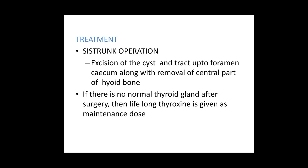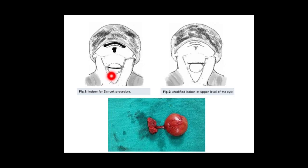The treatment is surgery and the operation is called the Sistrunk operation. It involves excision of the cyst and the tract up to the foramen cecum, along with the central part of the hyoid bone. If there is no normal thyroid gland, the patient will require lifelong oral thyroxin supplementation to remain euthyroid. The specimen shows the cyst, the tract, and the central part of the hyoid bone attached to it.